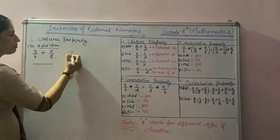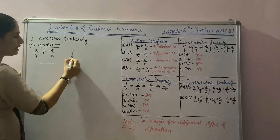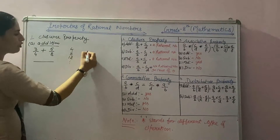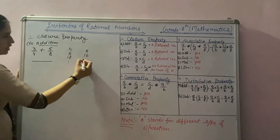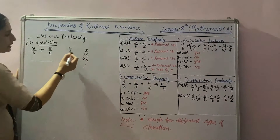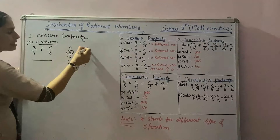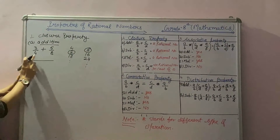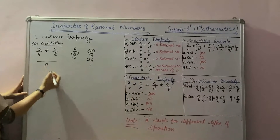Write the table of 4: 4 ones are 4, 4 twos are 8, 4 threes are 12. And write the table of 8: 8 ones are 8, 8 twos are 16, 8 threes are 24. In these two tables, 8 is the least common multiple. So the LCM of 4 and 8 is 8.